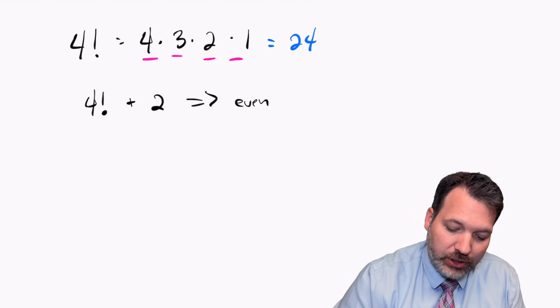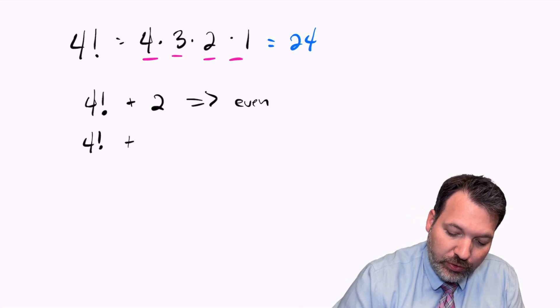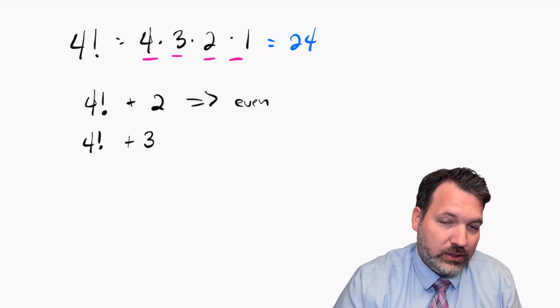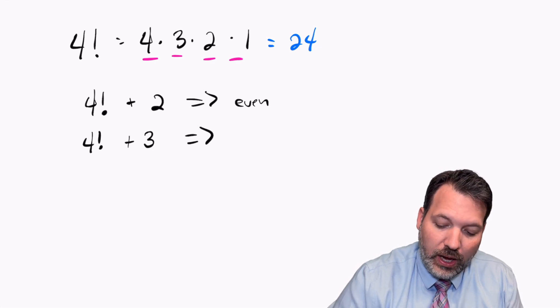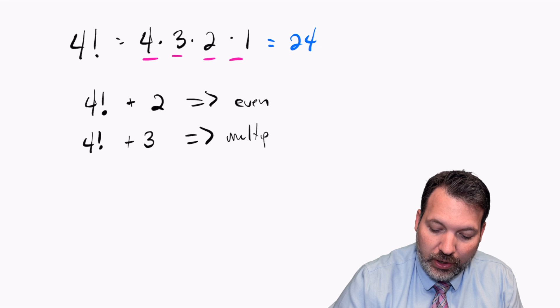We can use the same logic to make a number that's a multiple of 3. 4 factorial itself must be a multiple of 3. So when we add 3 to that, we get another number that's a multiple of 3.